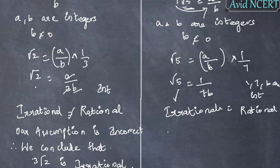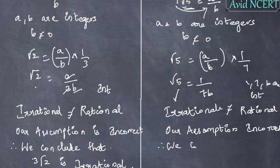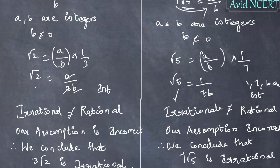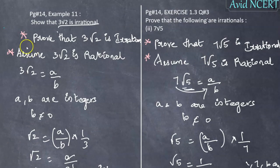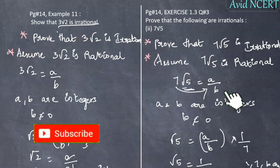This contradicts the fact that Irrational cannot equal Rational. So our assumption is incorrect, and therefore we conclude that 7√5 is Irrational. If you have any doubts, please let me know in the comments. Please subscribe for updates.